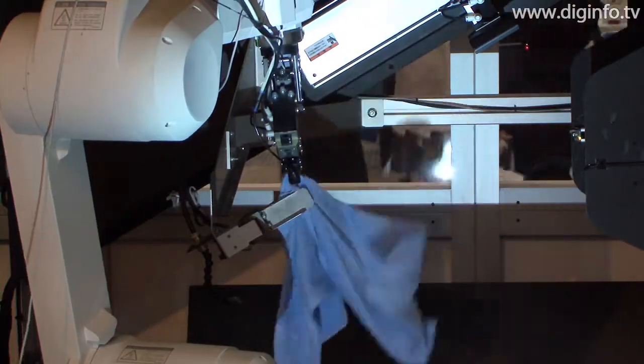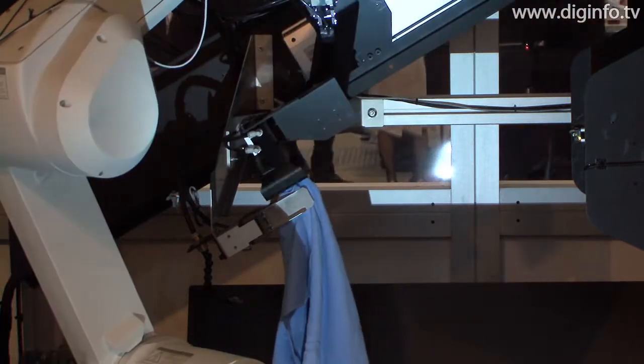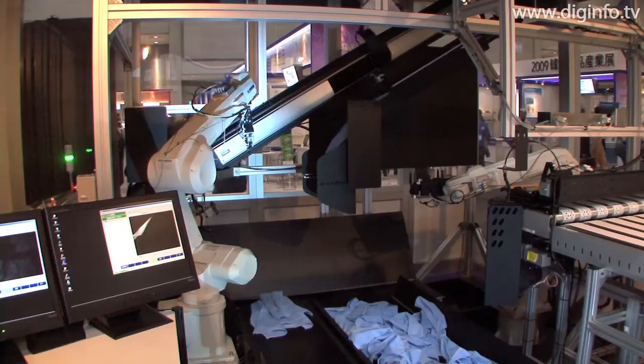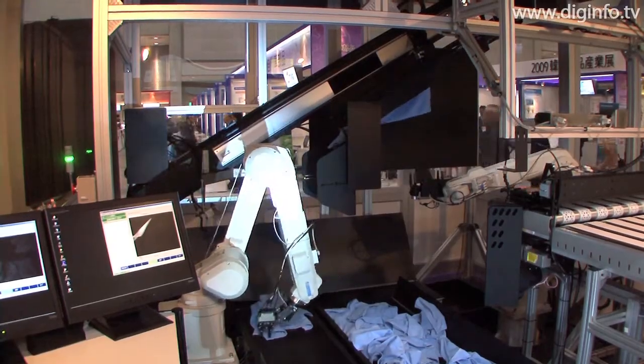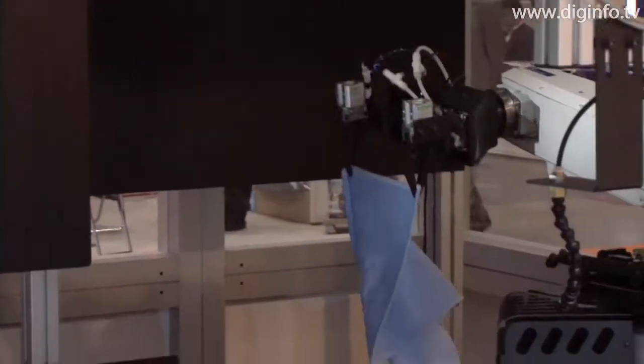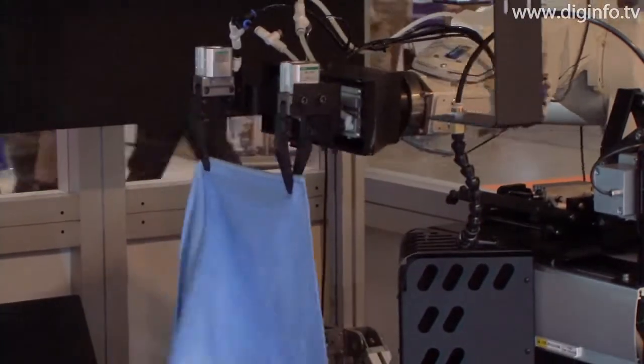Next, the robot observes the towel again and takes it by the corner. By pulling the corner upward, the robot observes the edge of the towel with another camera, then another robot hand is used to grasp the towel with both hands.